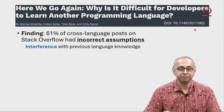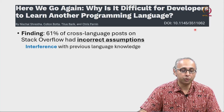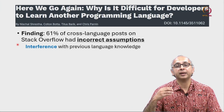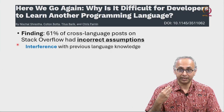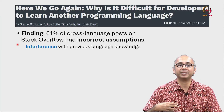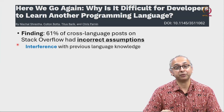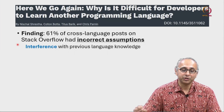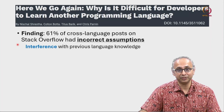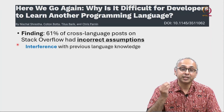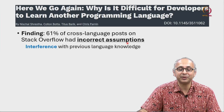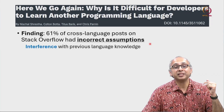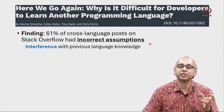What the researchers did in this paper is they examined a bunch of posts on the popular website Stack Overflow, focusing on posts where the people asking questions were explicitly saying they were familiar with one programming language and asking questions about a new one they were trying to learn. What these researchers found was that in 61% of these posts, the questioner had an incorrect assumption about the target language based on the language they were comfortable with — and the researchers called this interference.